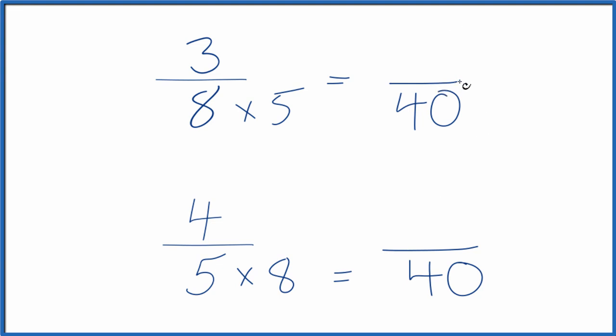We just need to figure out the numerators and compare those. Whichever is greater, that'll be the greater fraction between 3 eighths and 4 fifths.